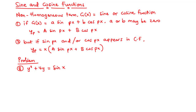Let's consider the two cases which may occur. For Case 1, if the non-homogeneous term is equal to a·sin(px) + b·cos(px), where a or b may be 0, then the particular integral yp equals a·sin(px) + b·cos(px).